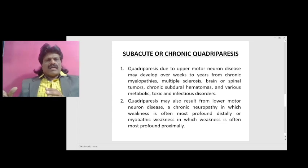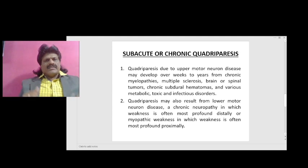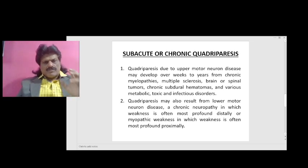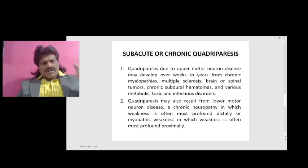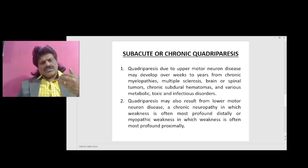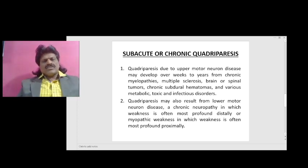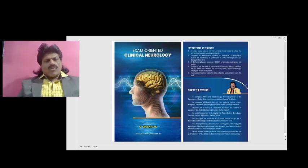Now let's talk about subacute and chronic quadriparesis. Quadriparesis due to upper motor neuron disease may develop over weeks to years from chronic myelopathies, multiple sclerosis, brain or spine tumors, chronic subdural hematomas, and various metabolic, toxic, and infectious disorders. Quadriparesis may also result from lower motor neuron disease — a chronic neuropathy in which weakness is often most profound distally, or myopathic weakness in which weakness is often most profound proximally.